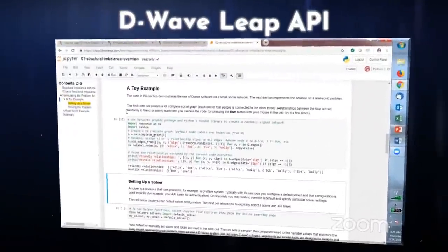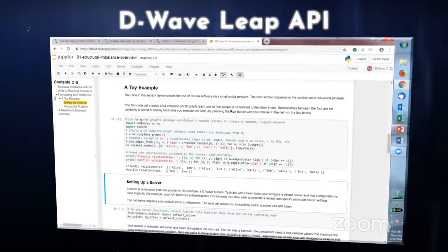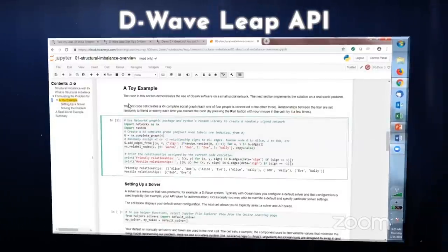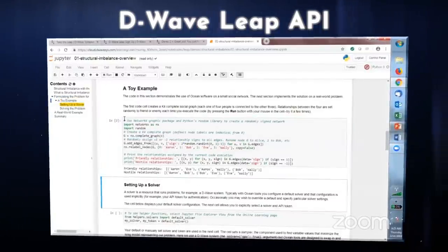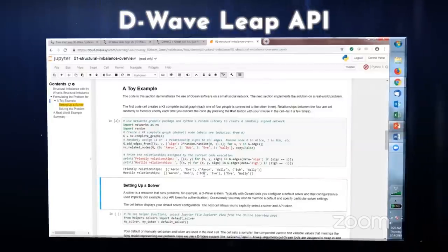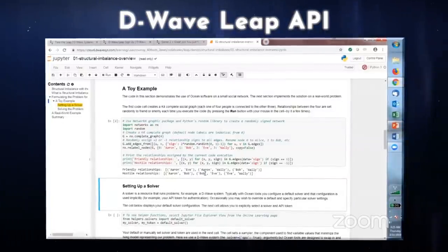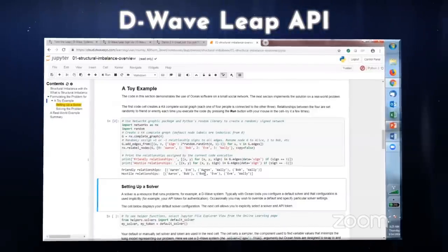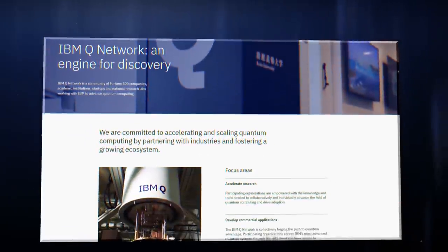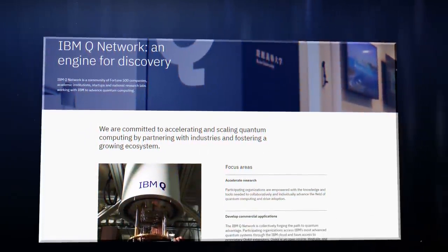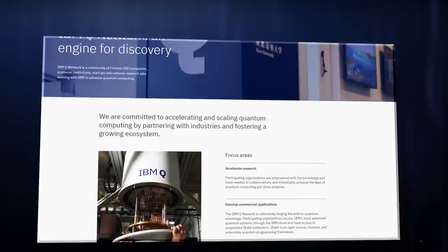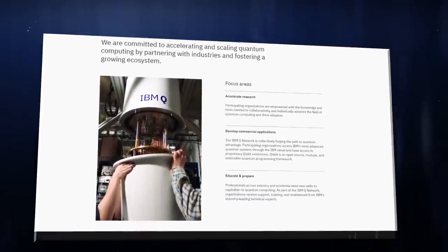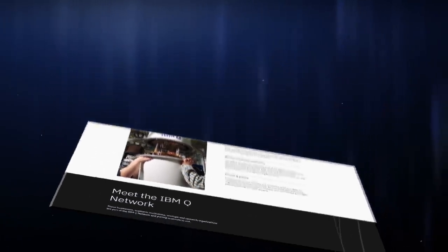If we want to experiment with quantum computing technology ourselves, we've got a few cloud options that we can access from our laptops. D-Wave has a quantum API called Leap with so much well-documented code, Jupyter notebooks included. Yes, you can code quantum algorithms in Python. I think I'm in love. With this technology, anyone can use quantum computing in their web or mobile applications, accessing it from the cloud. There's also IBM's Q network, which also offers an API to try its machines.